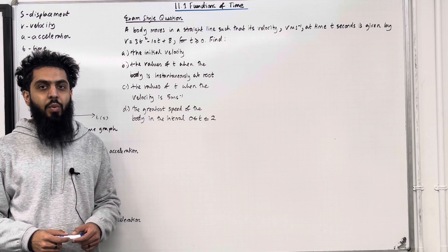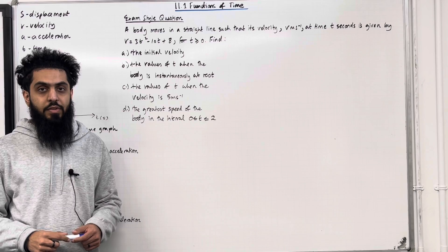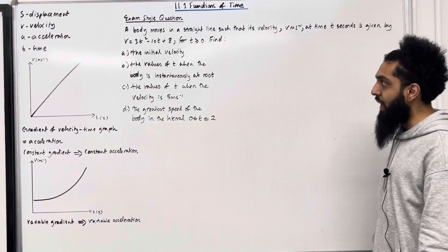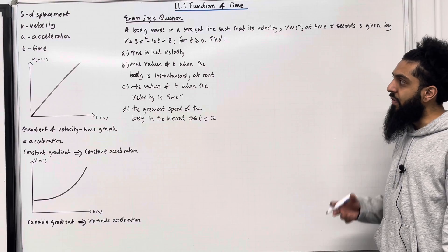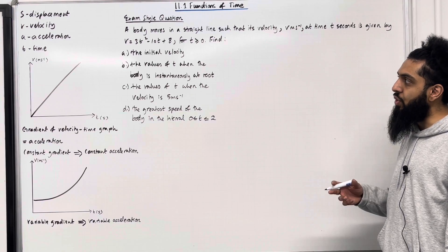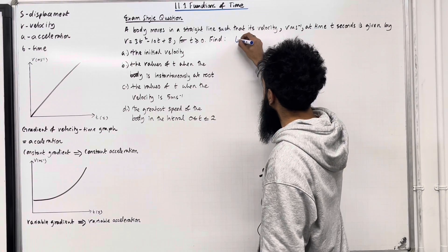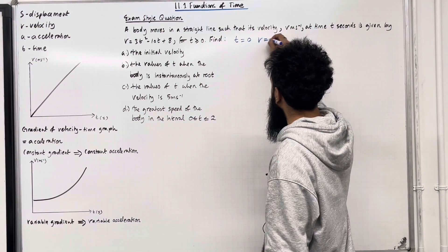To better understand the question, I'm going to start by sketching the velocity-time graph. Right, so I'm going to begin by working out the v-intercept. To find the v-intercept, I need to substitute t equals 0 into the v-equation. So when I substitute t equals 0, I get v equal 8.